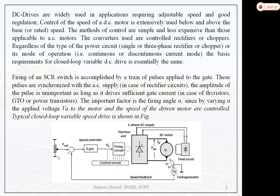From the measured speed we can generate the back EMF. That can be compared to produce an error signal, and then we can design a PI controller. Based on that, we decide what the firing angle will be. This control circuit decides the firing angle depending on the error signal.